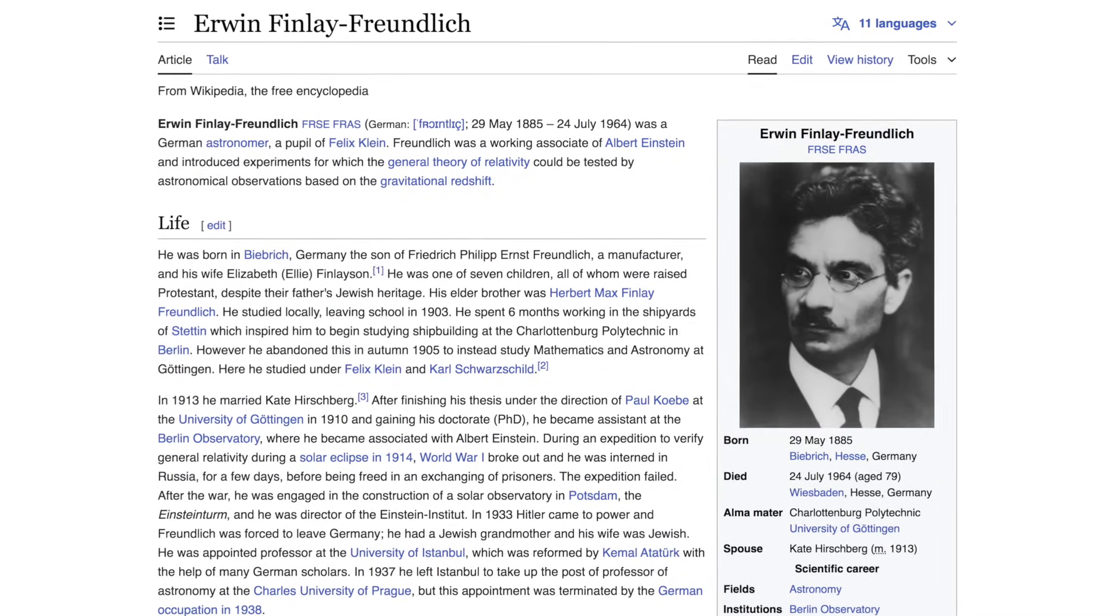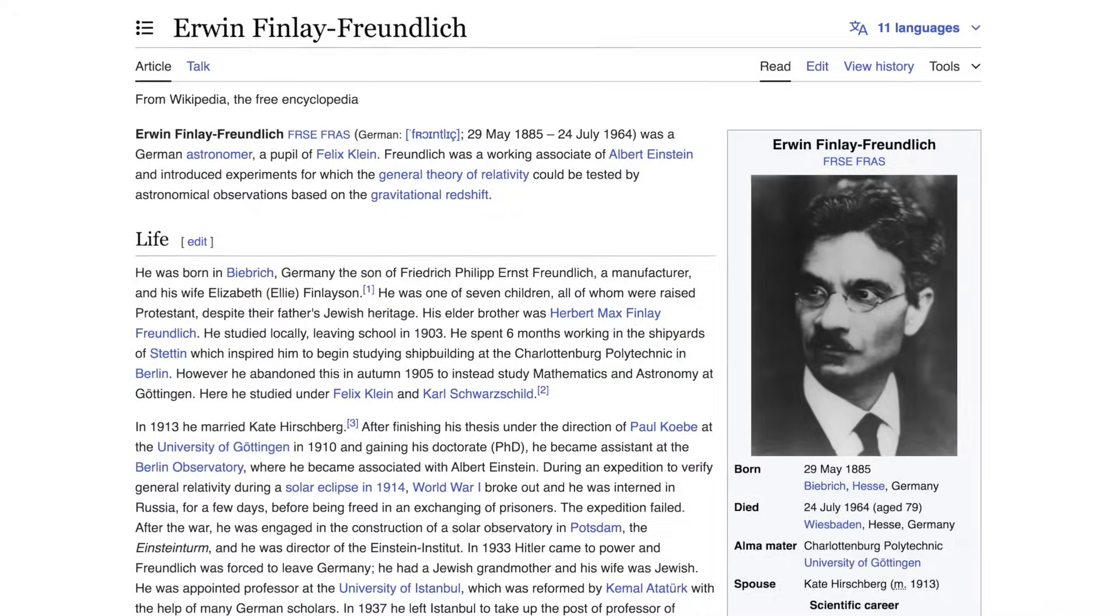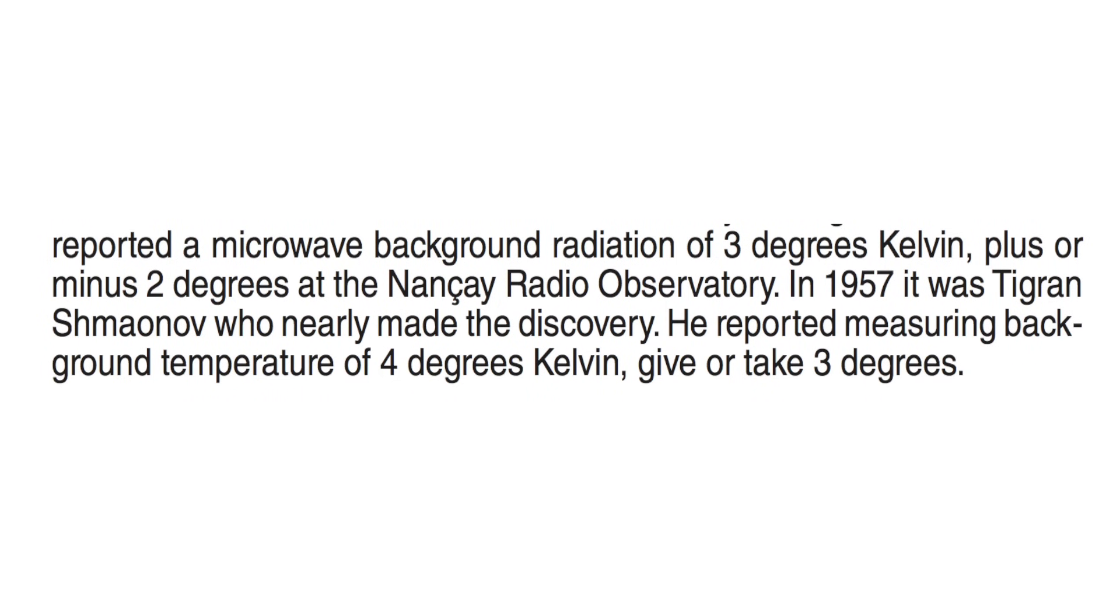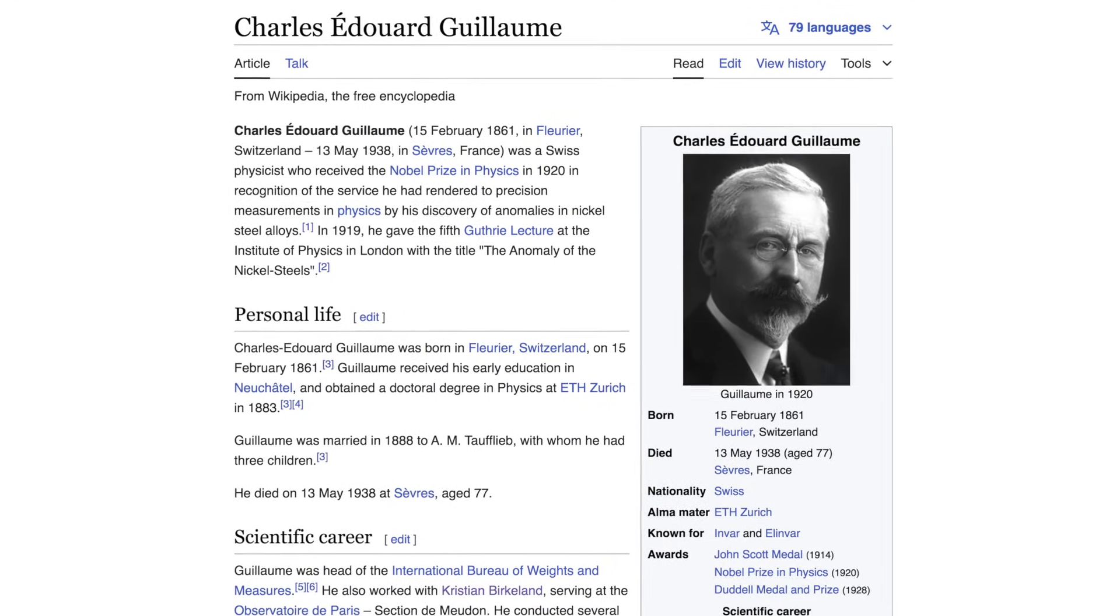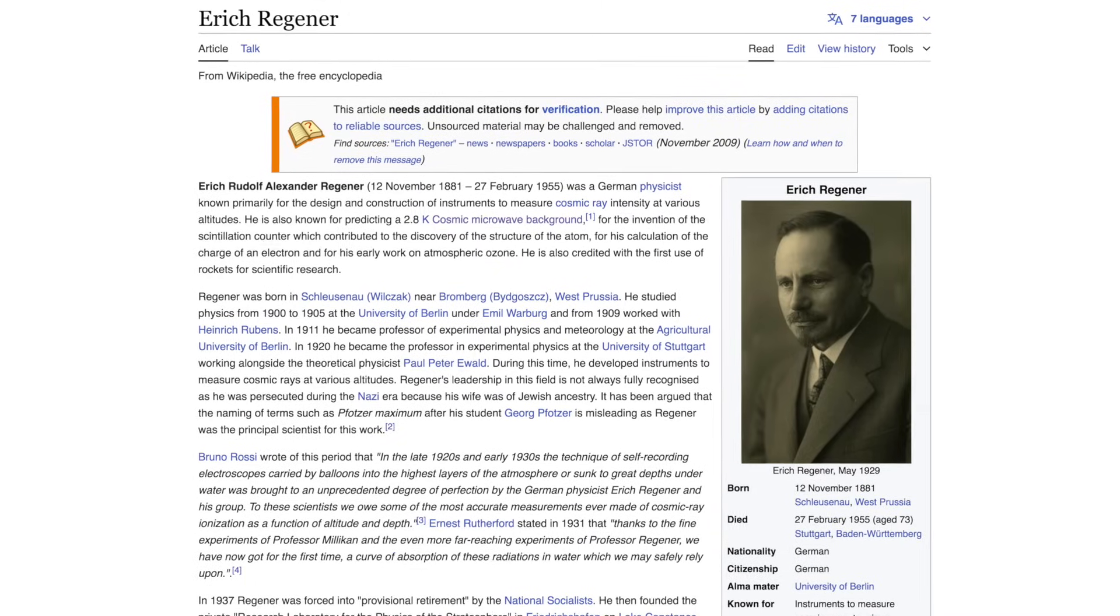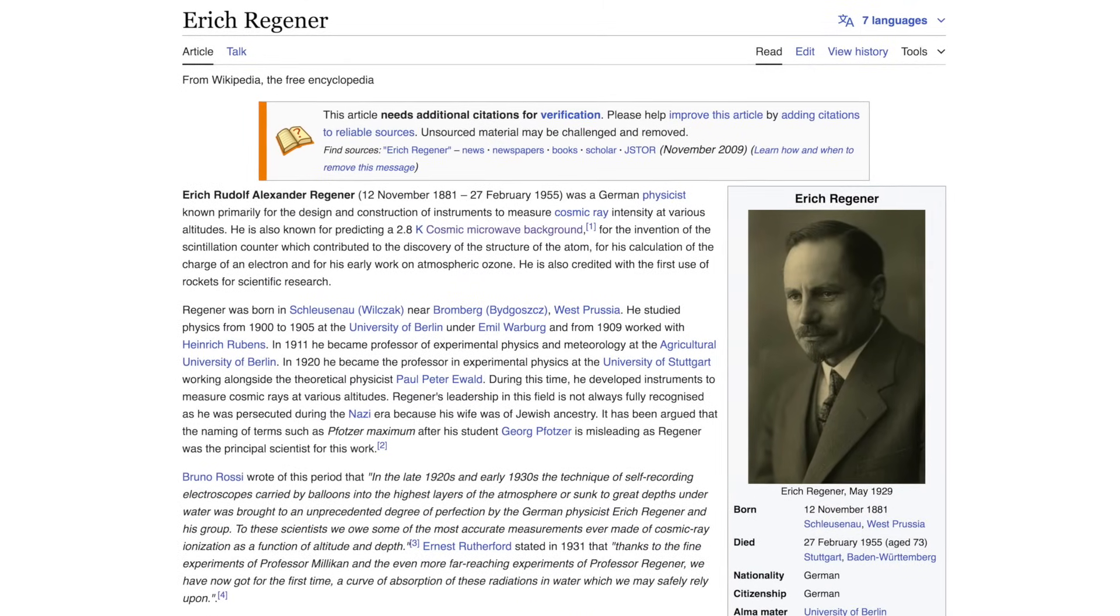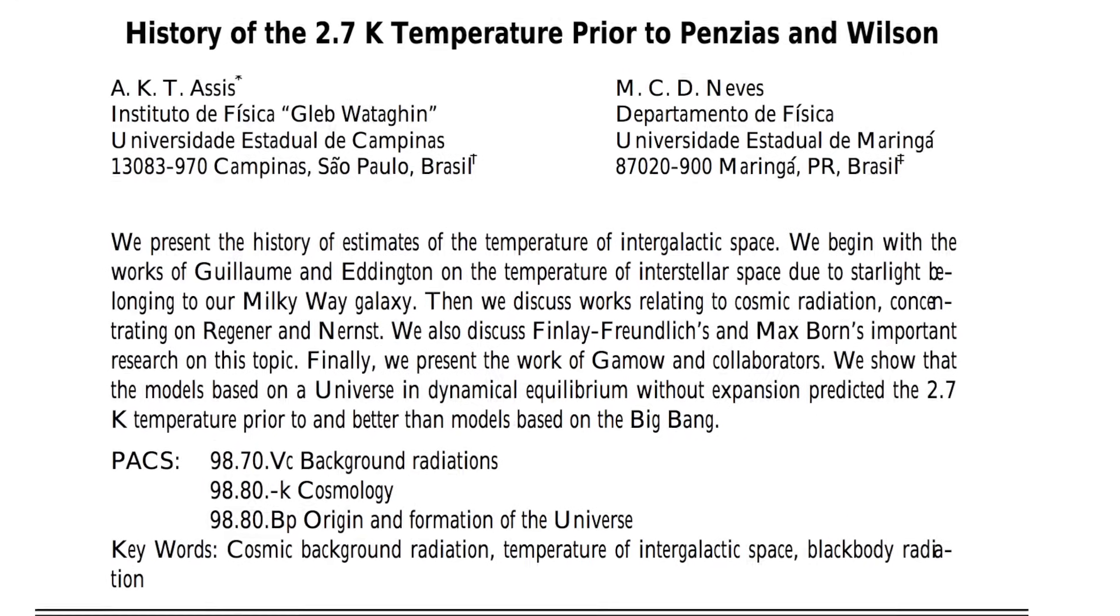But in 1954, Finlay-Freundlich predicted 1.926K on the basis of tired light assumptions, and Tigran Shmaonov threw his guess in at 3K in 1955. Then we got Charles Edward Guillaume in 1896 who predicted 5.6 due to heating from starlight. Arthur Eddington refined these calculations way back in 1926 down to 3.5 Kelvin. Eric Regener predicted 2.8 in 1933. Every one of them an ignorant primitive studying pseudoscience, no doubt.